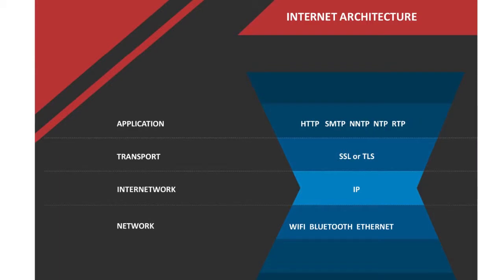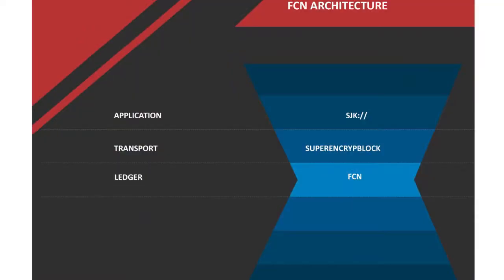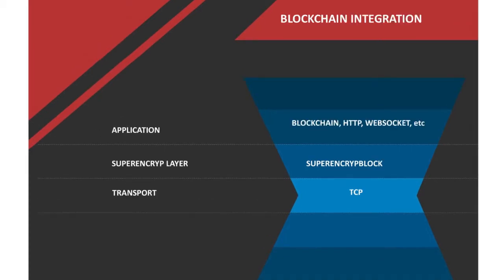This is the architecture that we change — the layers. You know the OSI model layers. We change the internet layers — we are changing the transport protocol and another three layers. We name it Superencrypt Block. Currently the protocol is TCP/IP — Transmission Control Protocol, Internet Protocol suite. So we change it, naming it Superencrypt Block. With that, we can run whatever application, like blockchain and many more.